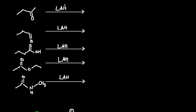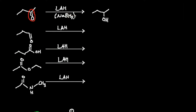Now let's go into some practice problems. LAH can reduce everything borohydride can, plus more. The first compound is a ketone — we take that C=O double bond and reduce it to a simple OH. We could have also accomplished this with sodium borohydride since NaBH4 reduces ketones and aldehydes. The second compound is an aldehyde — LAH reduces the C=O simply into an OH, giving a primary alcohol. You might also see this compound written in a different orientation.